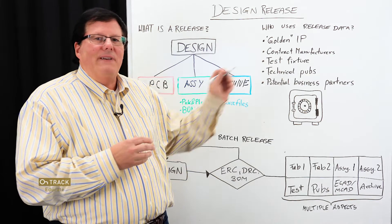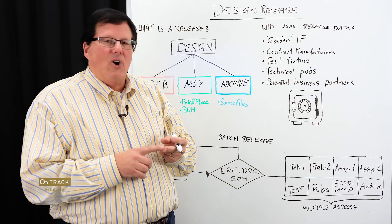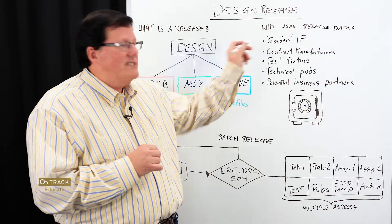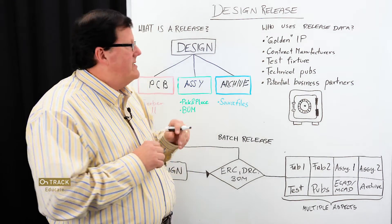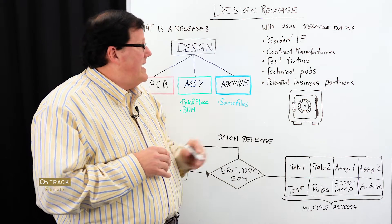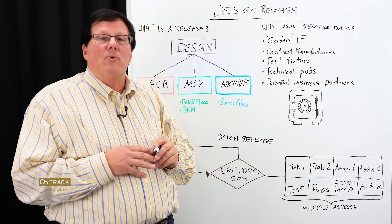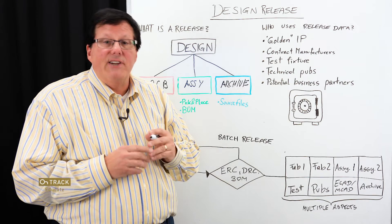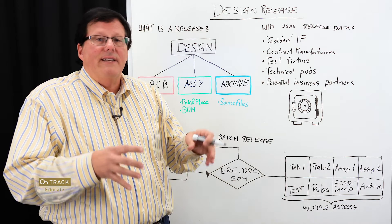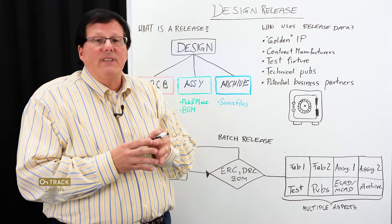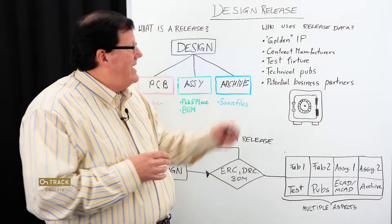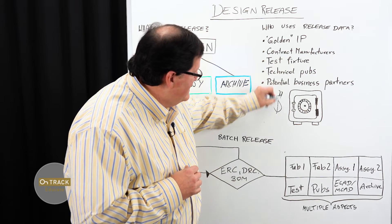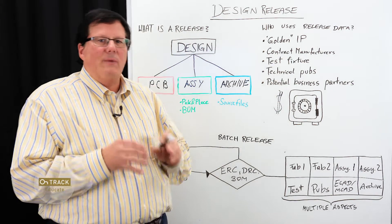This IP, this release, is where you want to start when you upgrade the product or derive extra products from it — you want a golden starting point. That's why it's so important to have complete release packages. Other entities will use this downstream: contract manufacturers, test fixture builders, internal technical pubs, sustaining engineering, and groups that continue evolving the product. There's a variety of entities that will use this release data, and storing it represents that corporate IP.